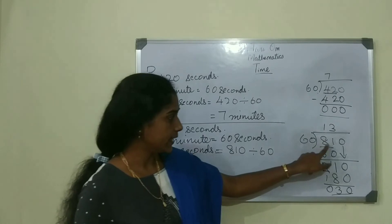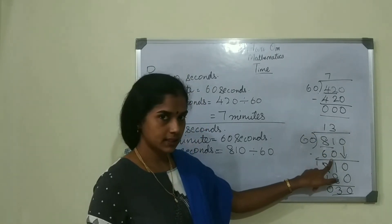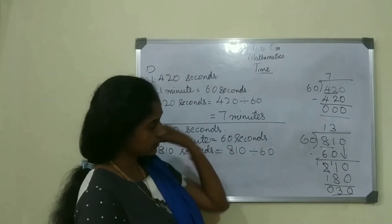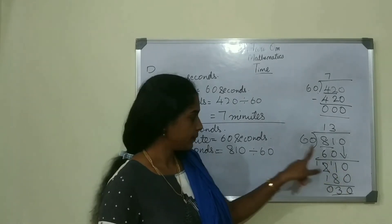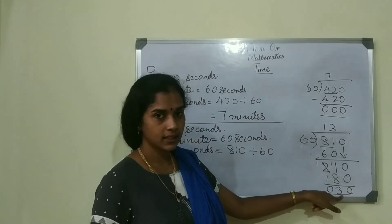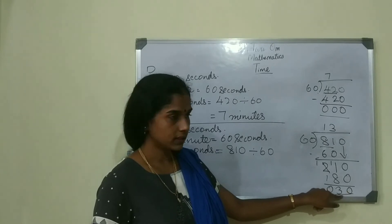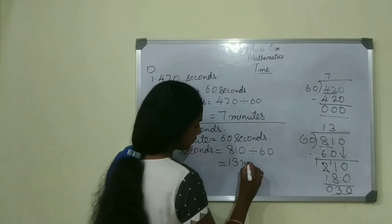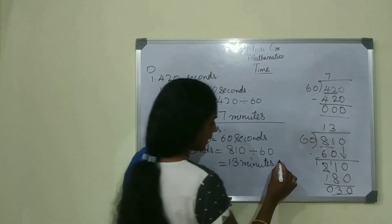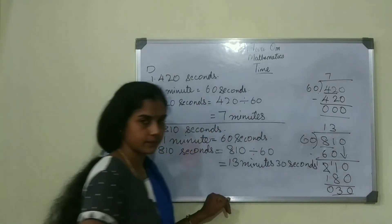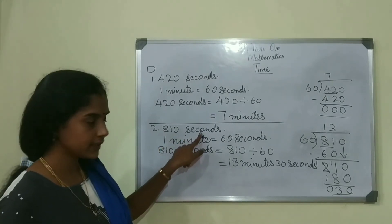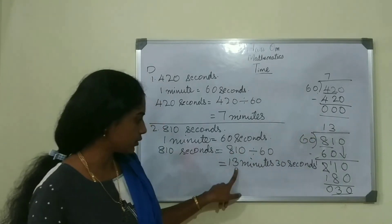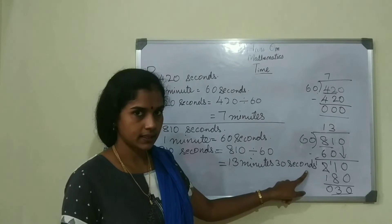The quotient will be the minutes and the remainder will be the seconds. So 810 seconds equals 13 minutes and 30 seconds. 810 divided by 60 gives quotient 13 and remainder 30, so the answer is 13 minutes 30 seconds.